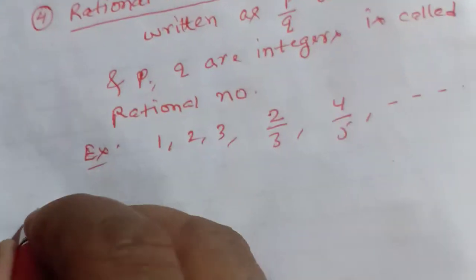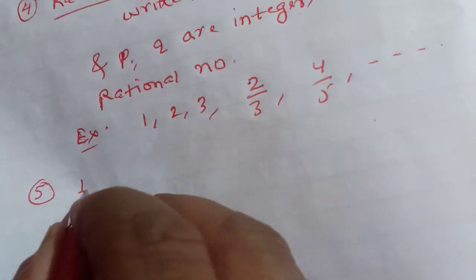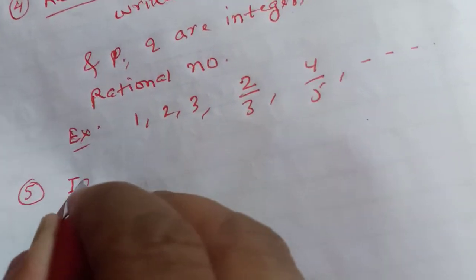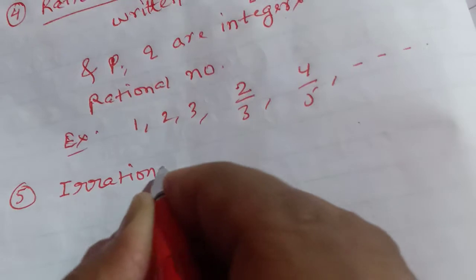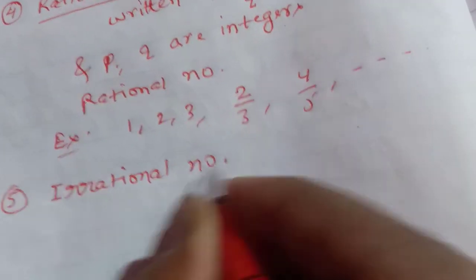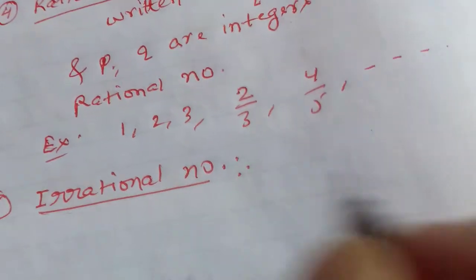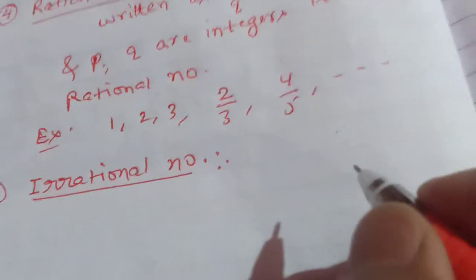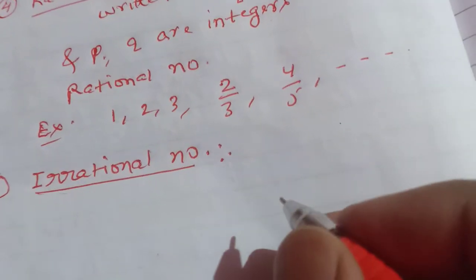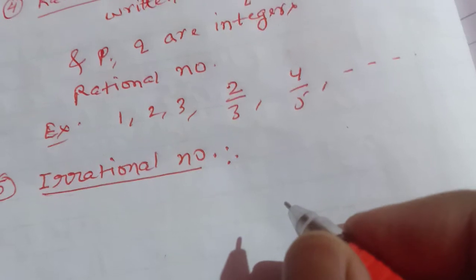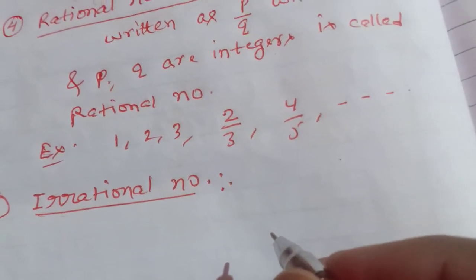The fifth number type is irrational number. The number that is not rational — it means the number that cannot be written as P by Q — is called an irrational number.